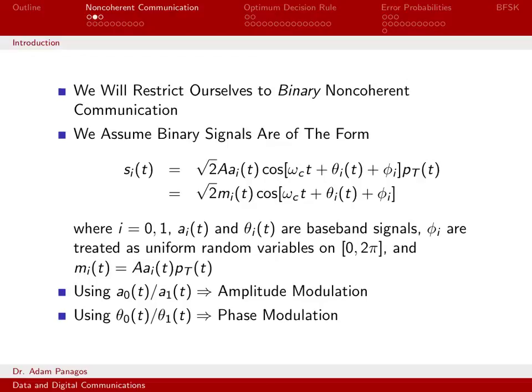In our discussion of noncoherent techniques, we're going to keep things pretty simple. We're going to restrict ourselves to just binary noncoherent communication. So when we do binary comms, that means we just have two signals. The signals that we're going to look at are going to have this form. So S_i(t), where i can be 0 or 1. Those are the two signals. We have signal S_0 and signal S_1. The general form we can write is this: square root of 2A times the baseband pulse shape, A_i(t), times a carrier. And that carrier has some phase, phi_i. And it also has a phase, theta_i, which can vary as a function of the message signal. And it, as usual, is limited on time between 0 and capital T. That's what the pulse function, P_T, does.